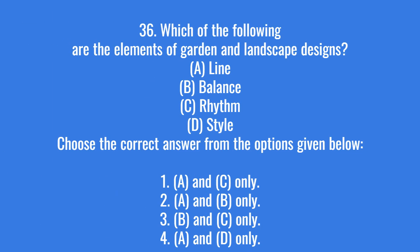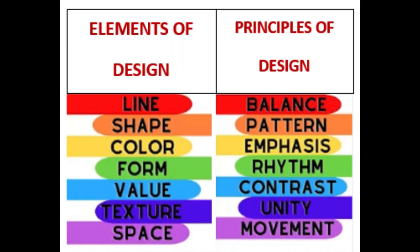Which of the following are the elements of garden and landscape design? The right answer is option 4: A and D only. The elements of design are point, line, shape, form, color, texture, value, space, visual weight, style, etc.